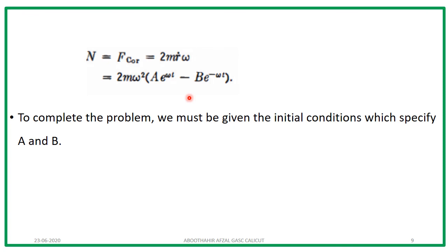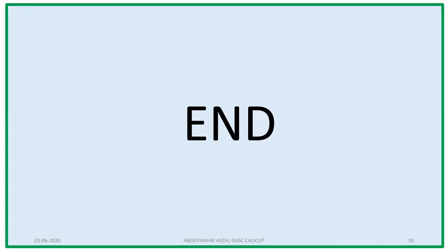In some cases the Coriolis effect is very observable, but for small bodies where omega and mass are very small, the value of the Coriolis force is very small and difficult to measure. With this, we come to the end of today's lecture.